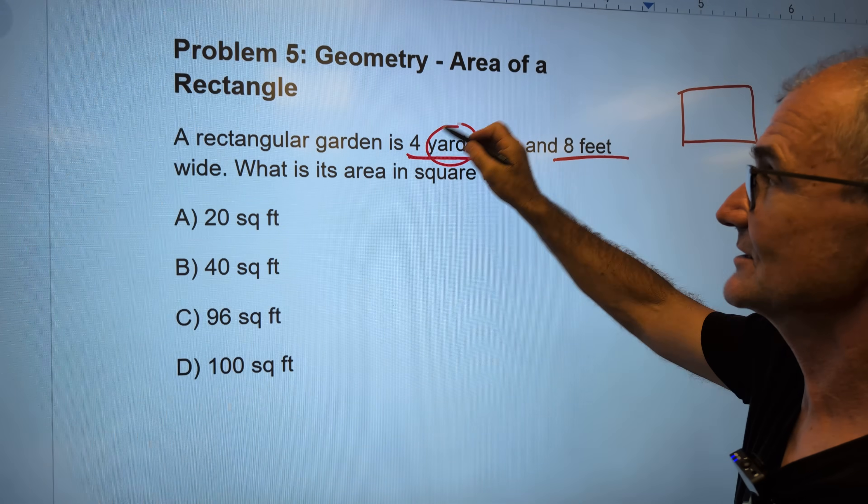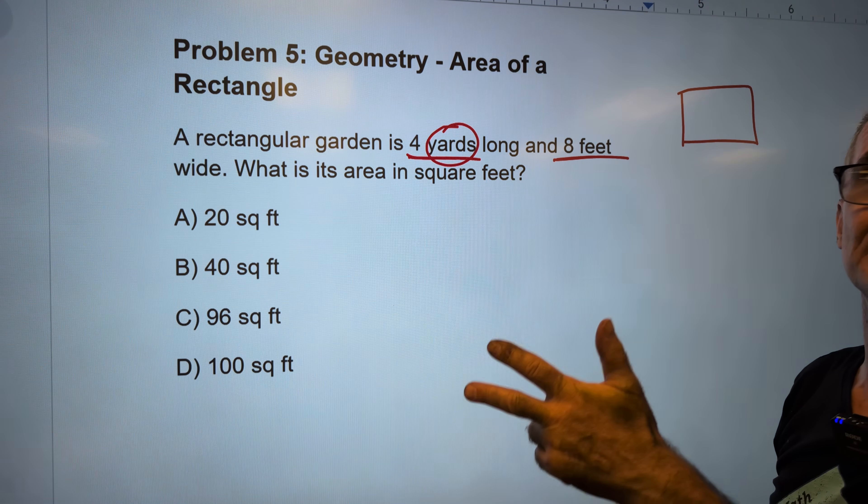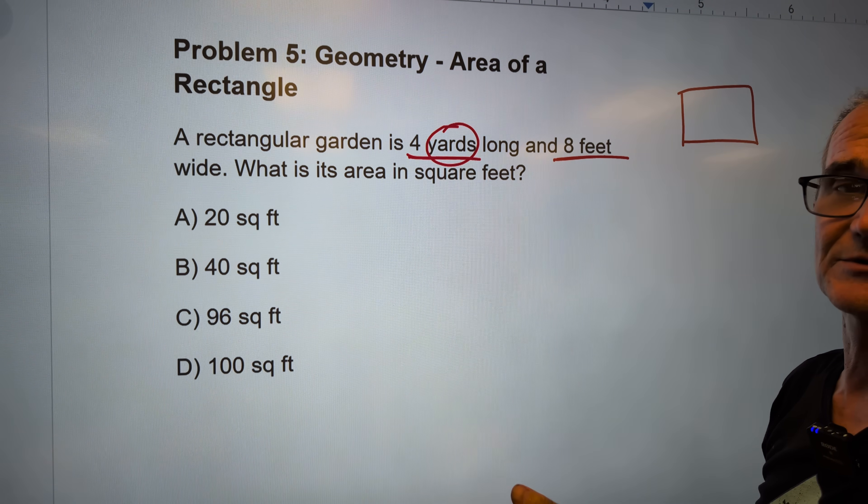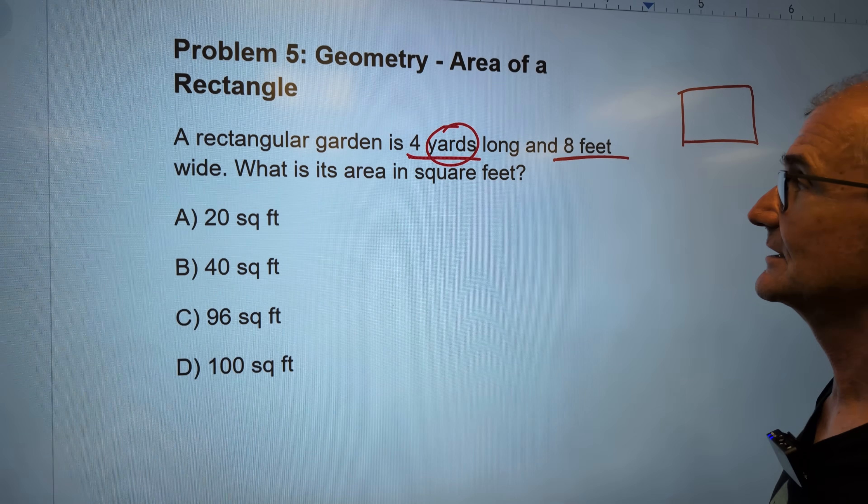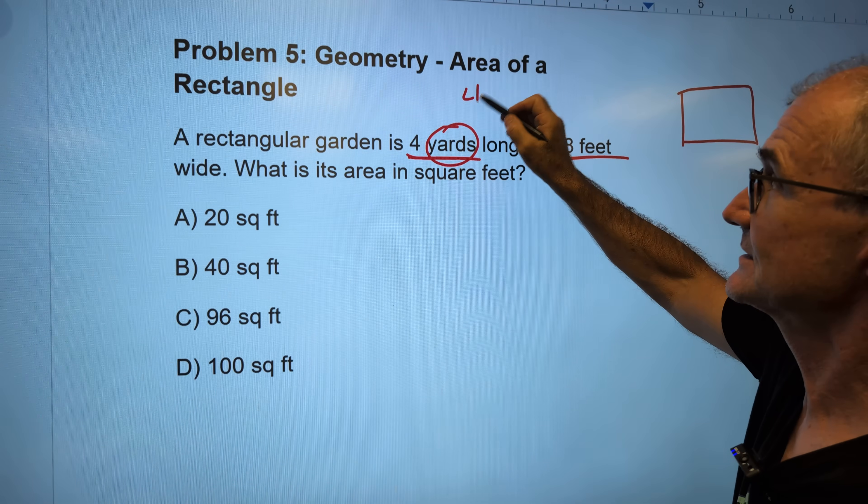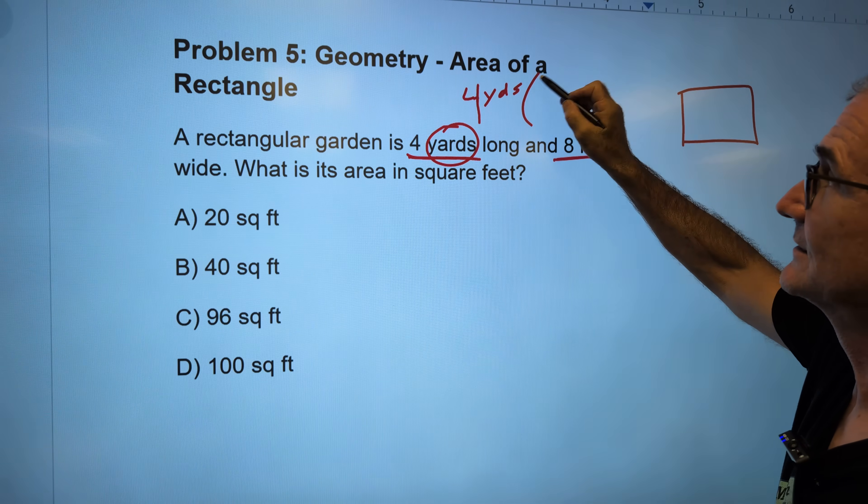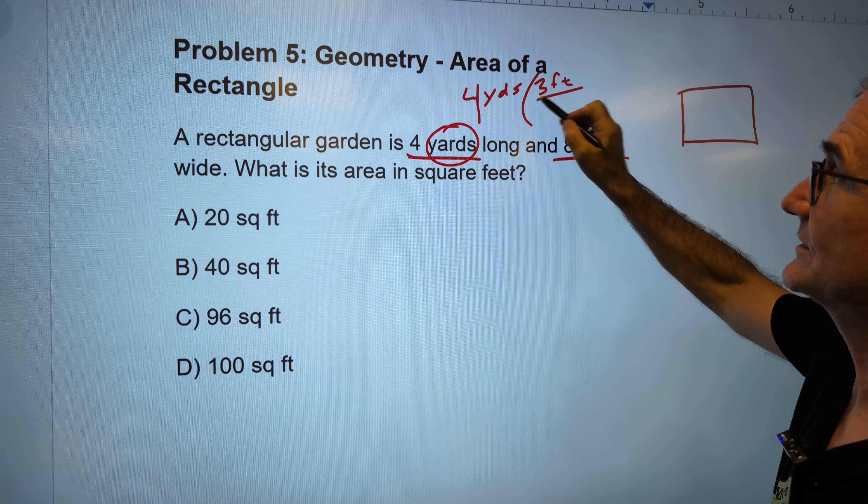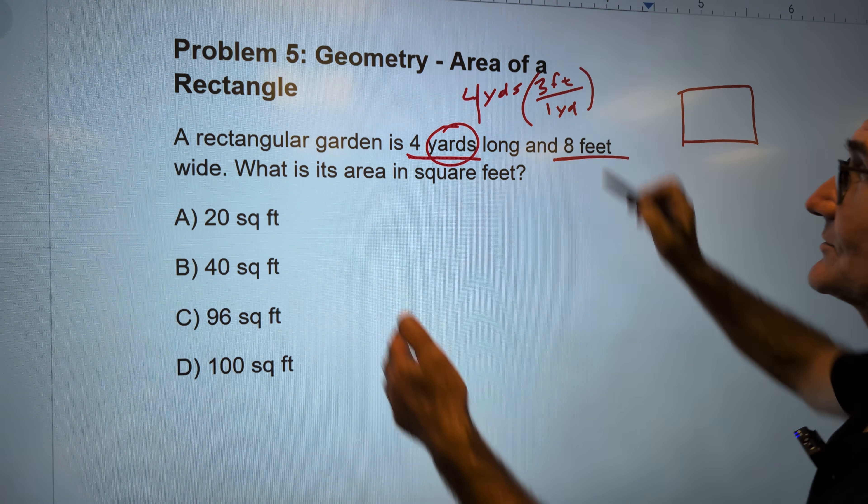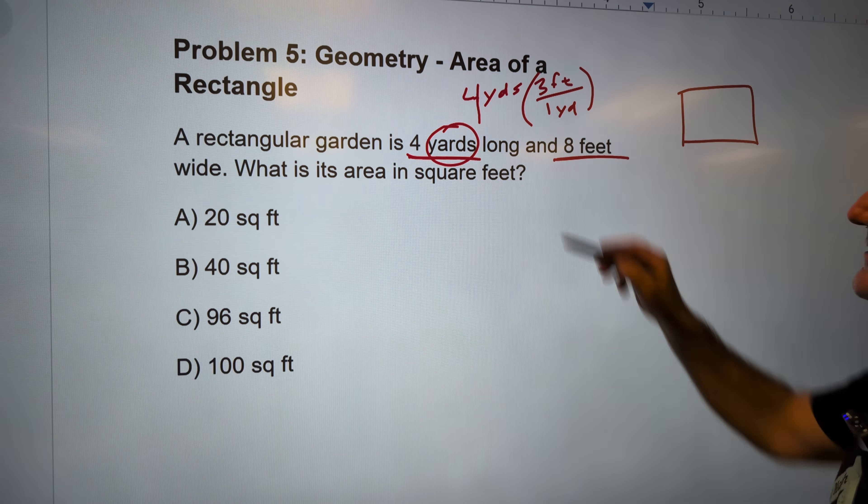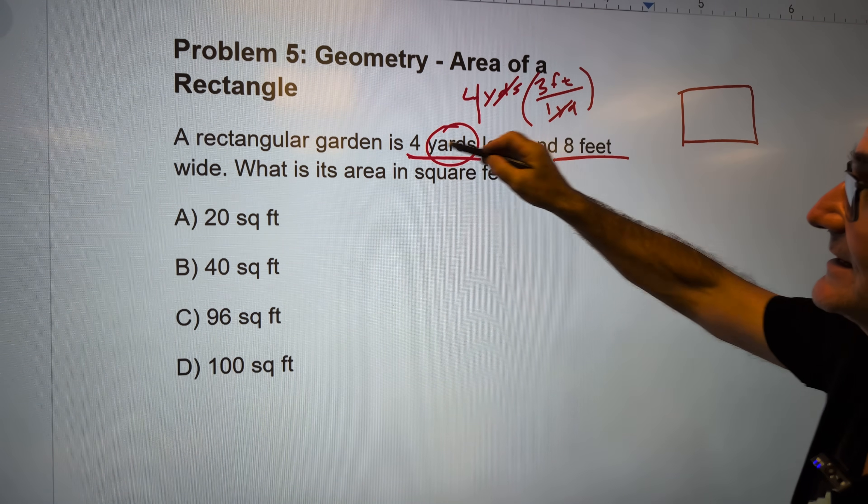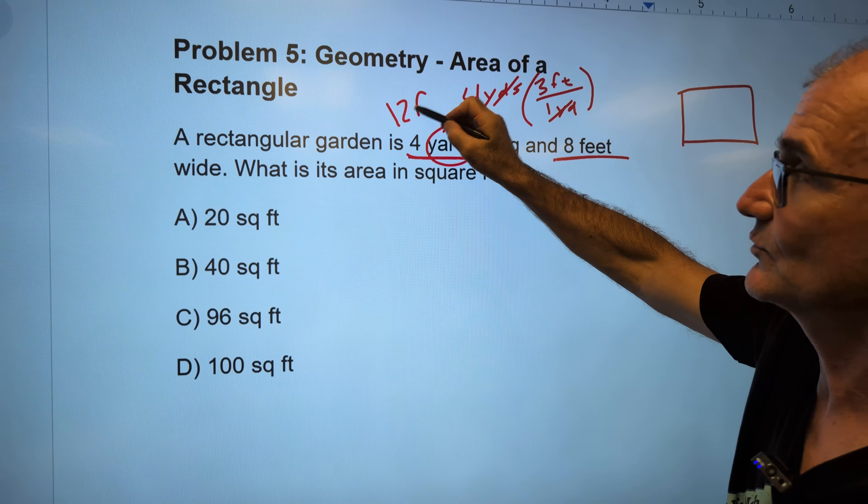Right here, these yards, there are 3 feet to 1 yard. That's an important thing to remember. 3 feet equal 1 yard. So if I have 4 yards and I want it in feet, I got to multiply by 1. 3 feet and 1 yard are the same. Multiplying it by 1, my yards cancel and this thing is the equivalent of 12 feet.